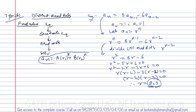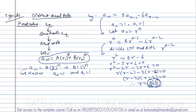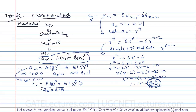Now substitute the roots into the solution equation: a_n = A·2^n + B·3^n. To find A and B, use the initial conditions. Let n = 0: a(0) = A·2⁰ + B·3⁰ = A + B. Since a(0) = 1, we get A + B = 1.